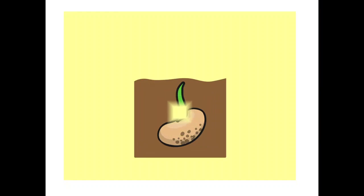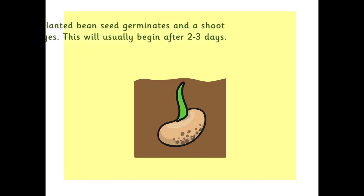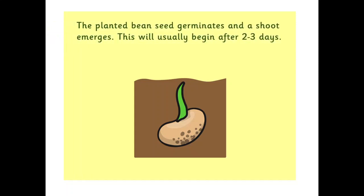Pay attention to the pictures which appear on your screen — they will give you a clear image of a bean seedling investigation. The planted bean seed germinates and a shoot emerges. This will usually begin after two to three days.